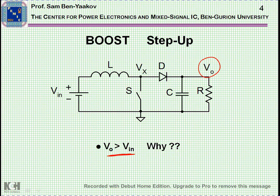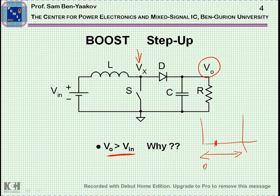If we look at the voltage at Vx, what we are going to see is something of this nature. Here is the period. During the time that the switch is on, the voltage is zero, because the switch is shorting Vx to ground.